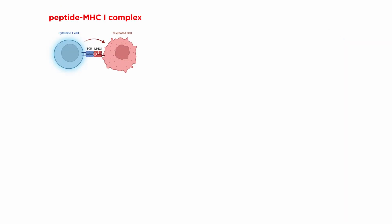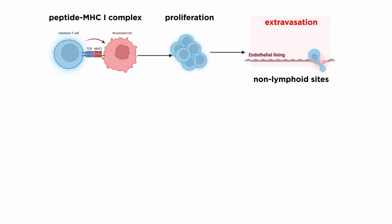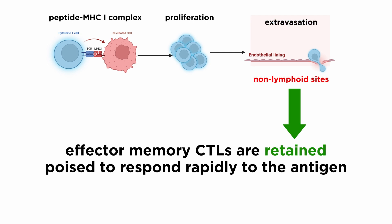When a CD8-plus T-cell encounters the correctly presented peptide MHC-1 complex, its localization and homing properties are altered in response. They undergo multiple rounds of proliferation to become activated CTLs, after which they move to non-lymphoid sites, tether to endothelial cells, and extravasate into target tissue. Importantly, a number of the effector memory CTLs are retained in these non-lymphoid tissues, where they are poised to respond rapidly should the antigen be encountered again.